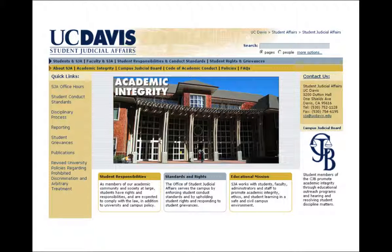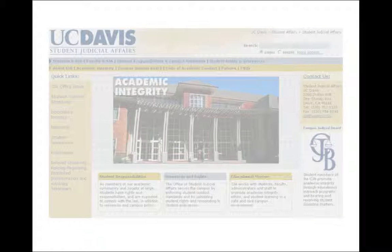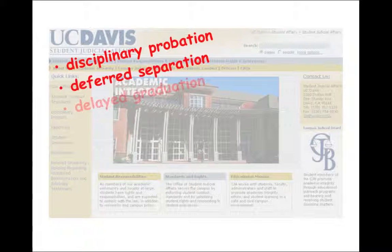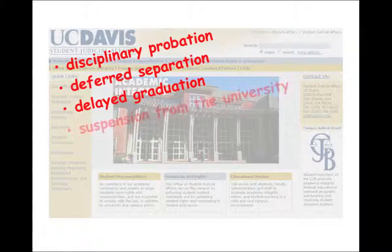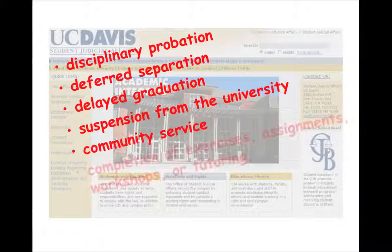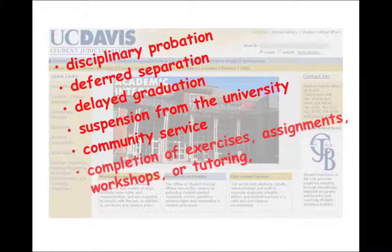Cases of suspected plagiarism at UC Davis are referred to Student Judicial Affairs. If you are found to have committed plagiarism or other academic misconduct, Student Judicial Affairs will decide on the appropriate disciplinary actions based on the situation, student intent, and other factors.